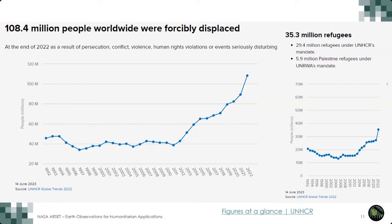To set the stage for where this work is coming from: displacement into refugee settings is a global challenge. Recent estimates, based on 2022 data published in June 2023, show over 100 million people are forcibly displaced. Of that population, about 35 million people are refugees — the subset of the forcibly displaced who have crossed international borders, sought asylum, and been granted legal protection status in countries that typically border the places refugees fled from.